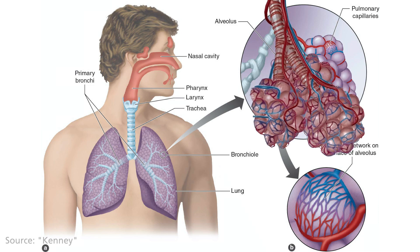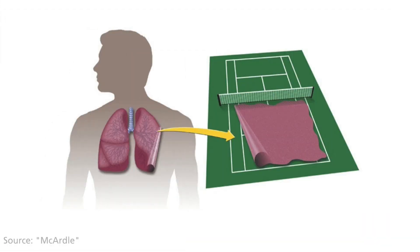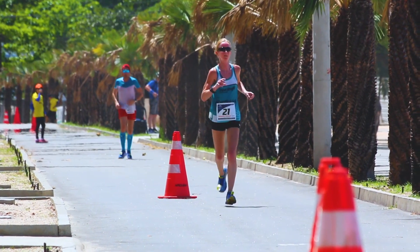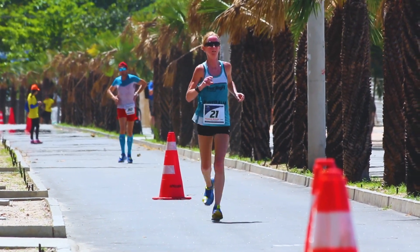One of the most interesting facts, in my opinion, is the total surface area of all the alveoli combined — it's the size of a tennis court. Based on this capacity and a few other factors, it's clear that neither ventilation nor diffusion will ever be a limiting factor, for example, during running a marathon. So whenever you hear someone say about a good marathon runner, 'oh, he must have huge lungs,' you can say no — it's nonsense.